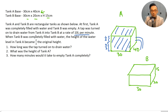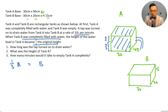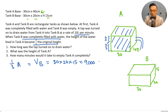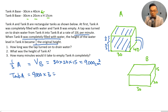So one-third of Tank A equals Tank B. Volume of B equals 30 times 20 times 15, which equals 9,000 cubic centimeters. So one-third of A equals 9,000 cubic centimeters, therefore Tank A equals 9,000 times 3 equals 27,000 cubic centimeters. Part one: how long was the tap turned on? The rate is 10 liters per minute, which equals 10,000 cubic centimeters per minute. The volume drained is 9,000 cubic centimeters, so time equals 9,000 divided by 10,000 times 1 minute equals 0.9 minutes.